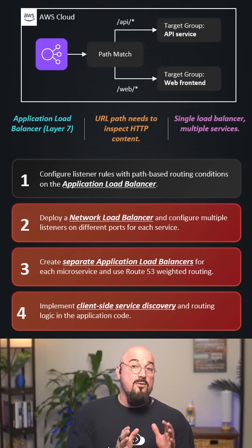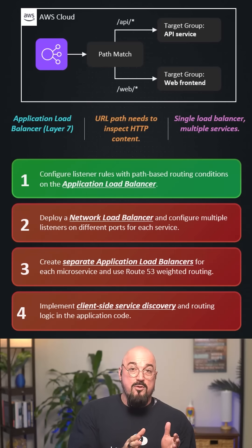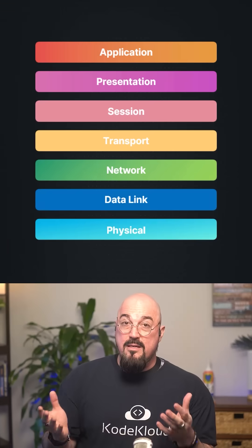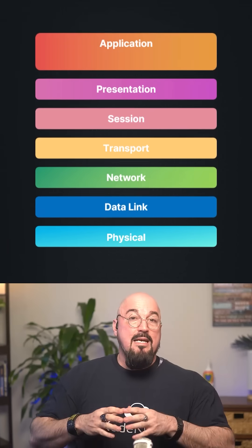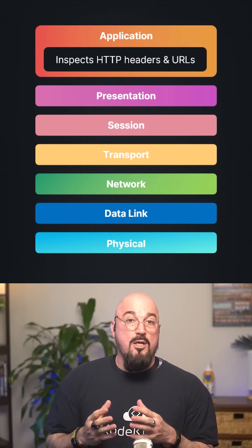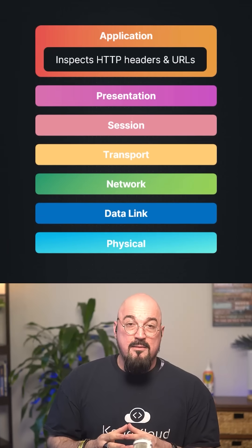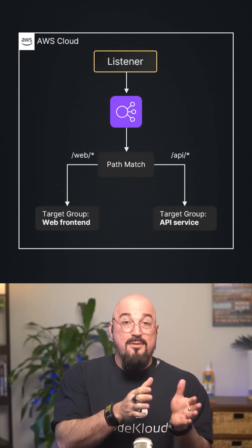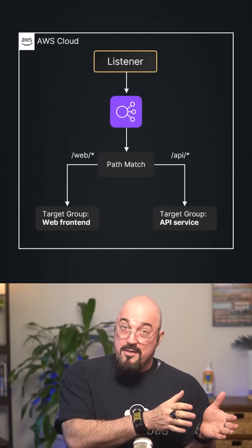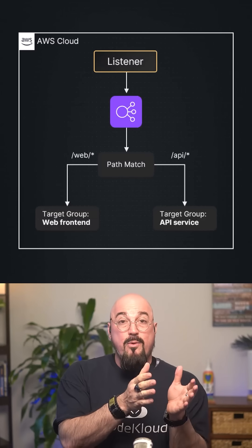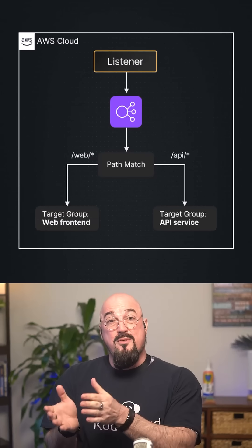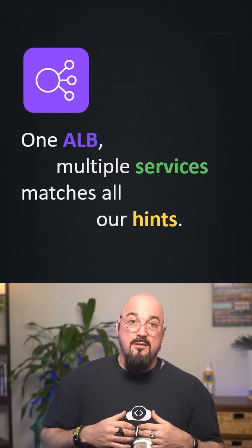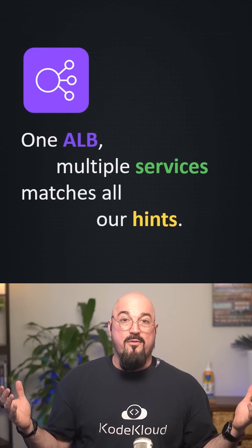The correct answer is ALB listener rules with path-based routing. ALB is layer seven — it can inspect HTTP content including URL paths. Listener rules will route /api to one target group and /web to another. One ALB, multiple services — this matches all of our hints.